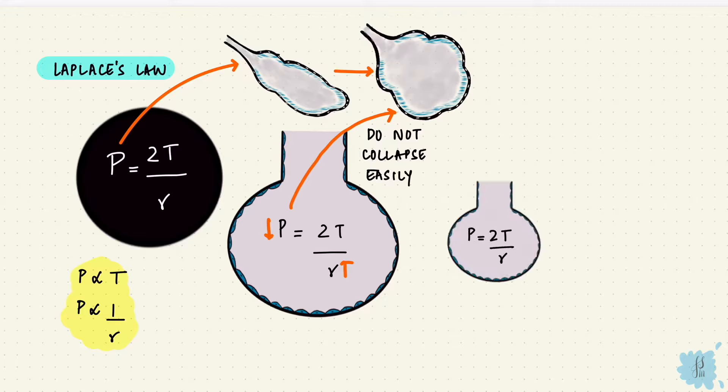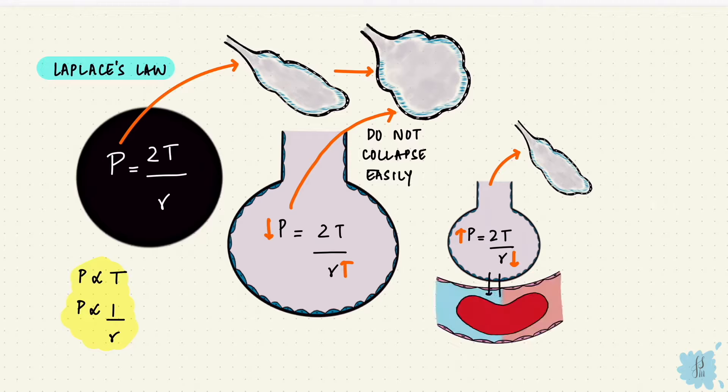While a smaller alveolus or one with a lower radius needs more pressure to keep it open, so it collapses easier. Alveoli have to be small because that increases their surface area. Their main job is gas exchange, and one of the factors that affects diffusion is cross-sectional area. So what can we change in this equation for them to stay open?